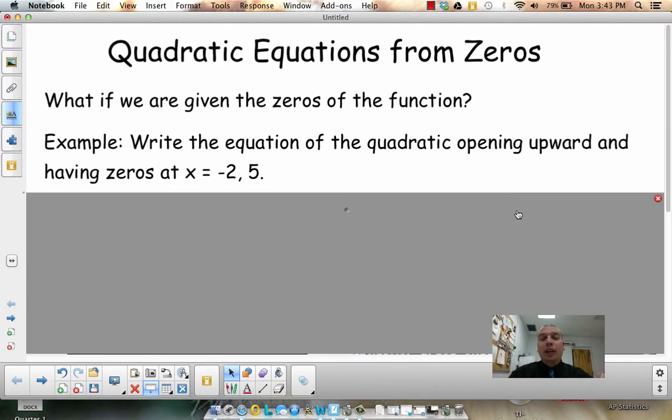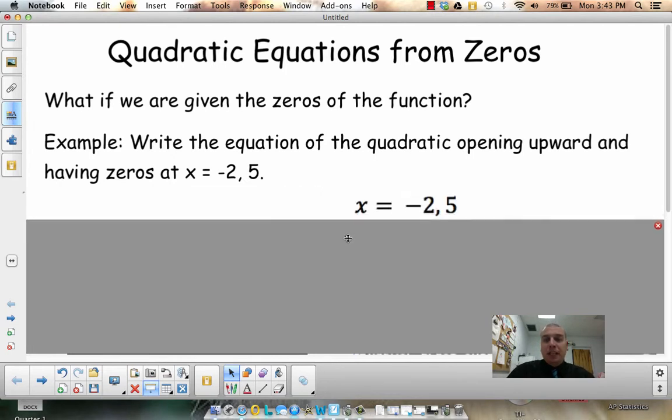So opening upward and having the zeros at negative 2, 5. Now remember from what we did today, the first step is I know that x is going to equal negative 2, 5.